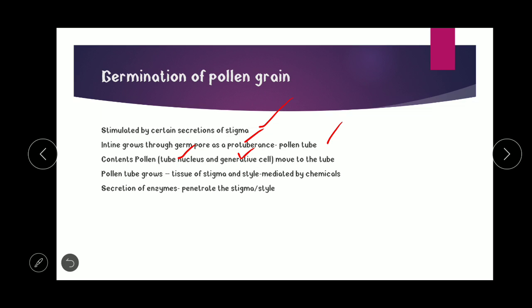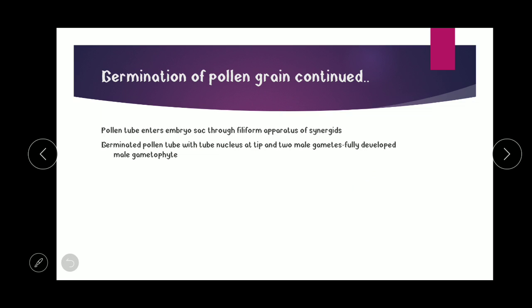The pollen tube grows through the tissues of the stigma and style, mediated by a number of chemicals. Secretion of enzymes — for example, through the callose layer — helps in penetration through the stigma and style to reach the ovule. The germinating pollen grain continues to grow until the pollen tube enters the embryo sac, which is the mature female gametophyte and the product of megagametogenesis.